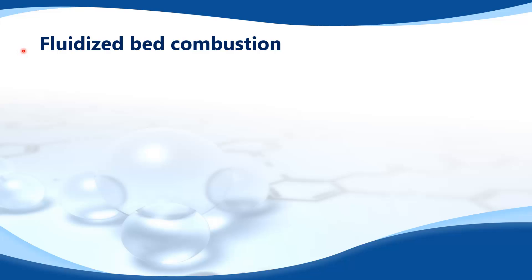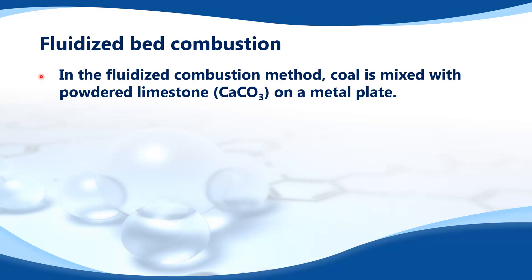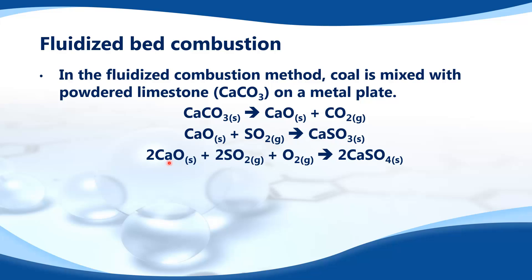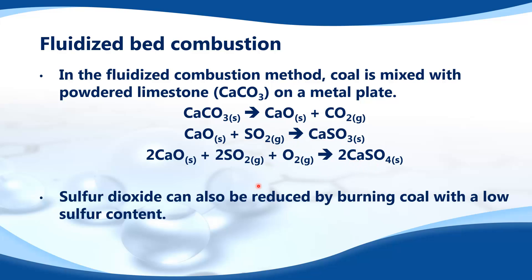Next is fluidized bed combustion. In this method, coal is mixed with powdered limestone, which is calcium carbonate, on a metal plate. Calcium carbonate decomposes to give calcium oxide and carbon dioxide gas. The calcium oxide then reacts with sulfur dioxide to give calcium sulfite. Calcium oxide can also react with sulfur dioxide and oxygen to give calcium sulfate. Sulfur dioxide can also be reduced by burning coal with a low sulfur content.